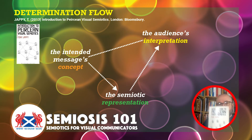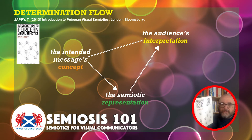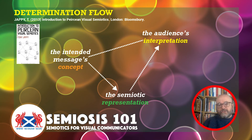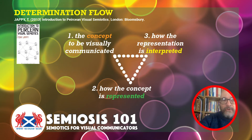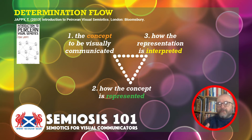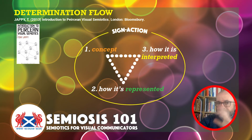In Professor Tony Jappy's excellent book Introduction to Peircean Visual Semiotics — which was a godsend to me when I was trying to understand this as part of my PhD — he talks in more accessible terms about Peirce's determination flow, and that's what we're talking about here. This triadic determination flow goes from the concept, through how it's represented, to its interpretation, and back to the concept. Tony Jappy talks about this determination flow in more accessible terms than Peirce does. This is my designer-centric simplification: semiosis as sign action — the concept to be visually communicated, how the concept is represented, and how the representation is interpreted, which leads us back to the message.